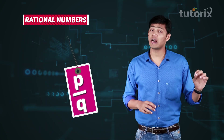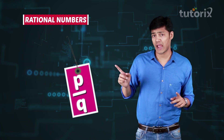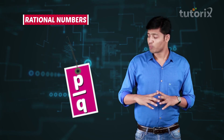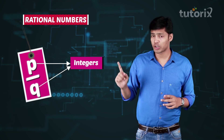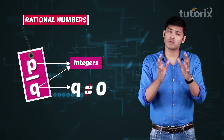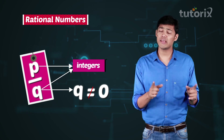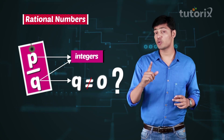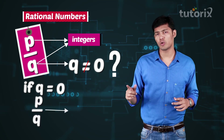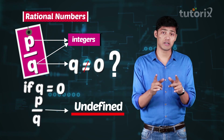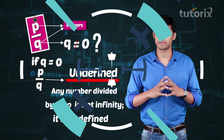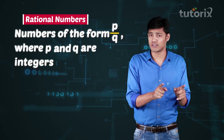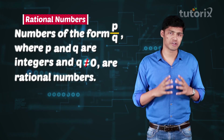There are some conditions that must be satisfied by both p and q. The first condition is both p and q must be integers. The second condition is the integer q should never be equal to zero. Why shouldn't q be zero? If q is zero, then p by q will be undefined. Remember, any number divided by zero is not infinity — it's undefined. So, numbers of the form p by q, where p and q are integers and q is not equal to zero, are rational numbers.